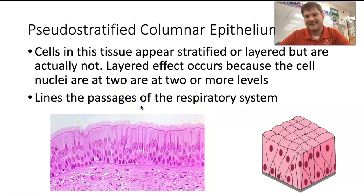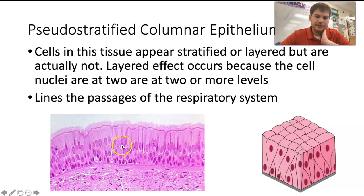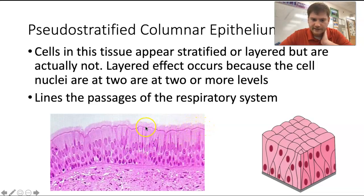Pseudostratified columnar epithelium is one of the exceptions. Pseudo means false, so this is falsely stratified columnar epithelium. Their nuclei are at different points in the cells, giving the appearance that they are stratified, but they are actually just one layer. It almost looks like four layers, but it's really just one. These line the passages of the respiratory system. You can really see the cilia here — that little pink membrane on top — those are the hair-like projections. Below the tissue is connective tissue.